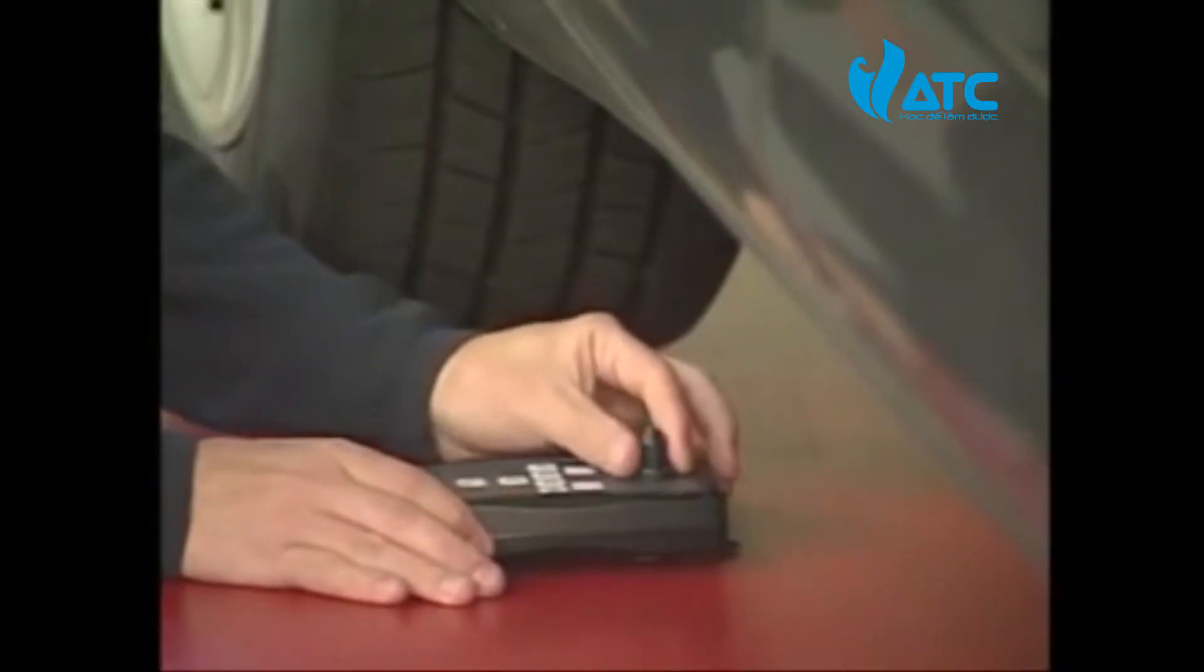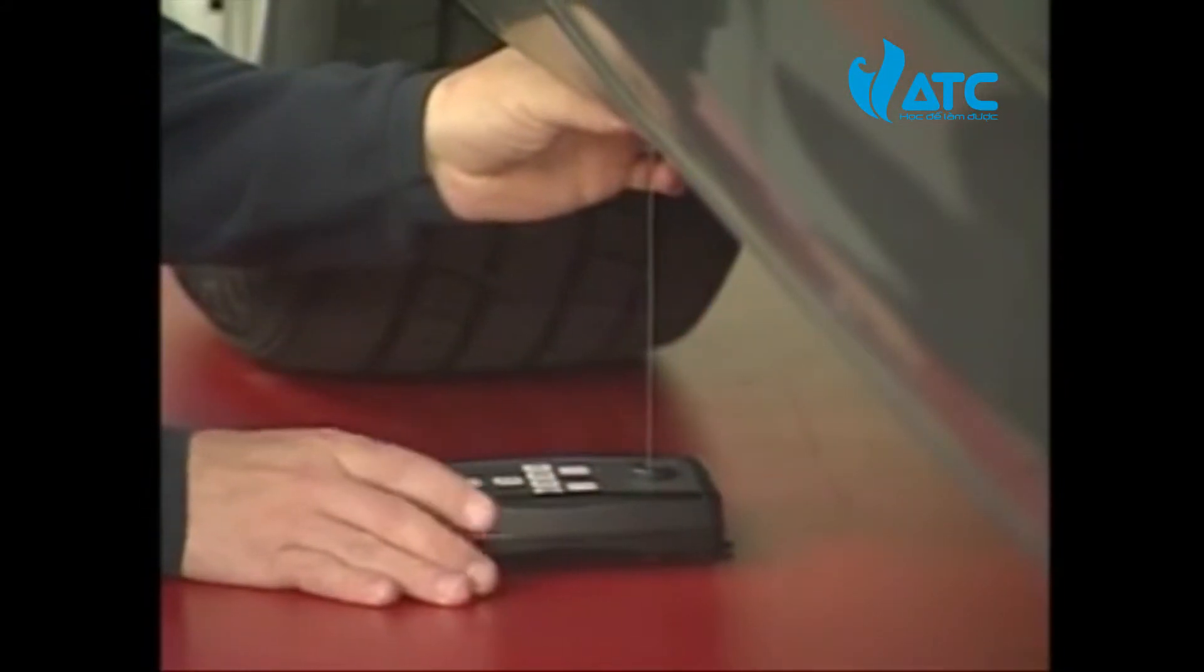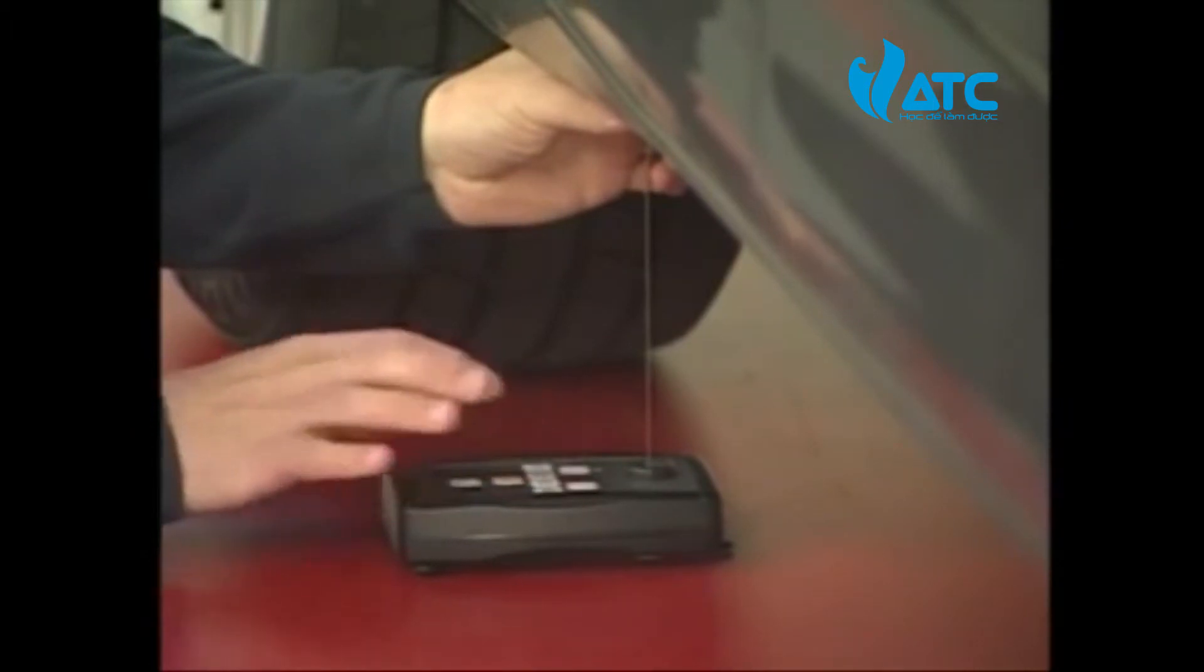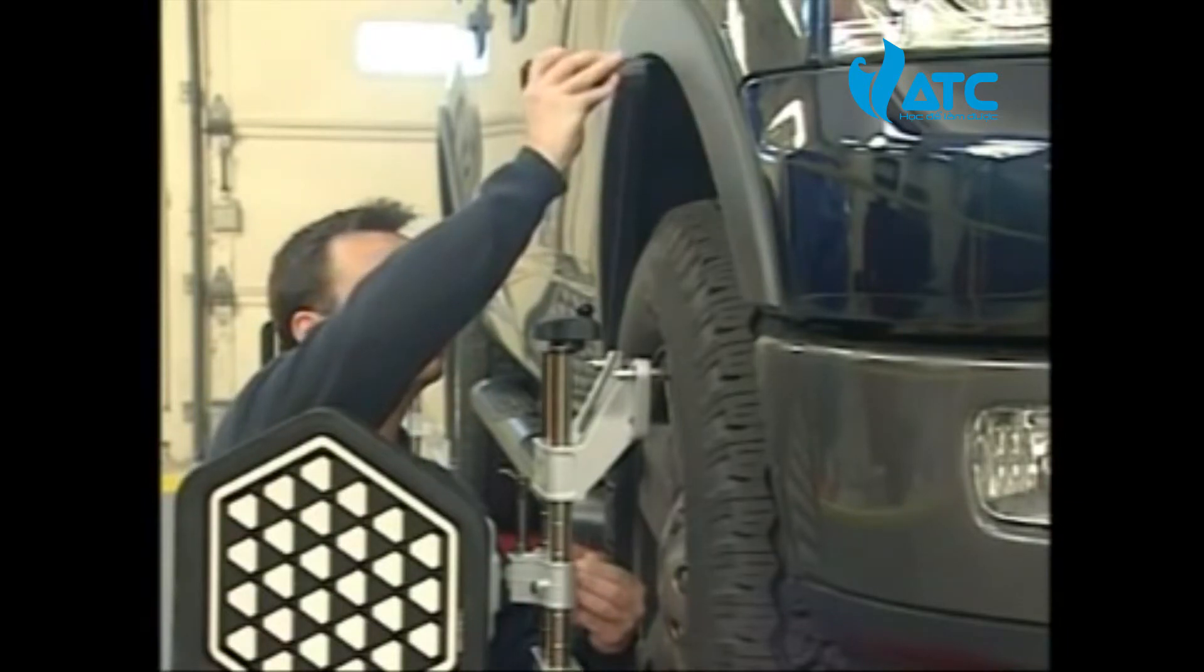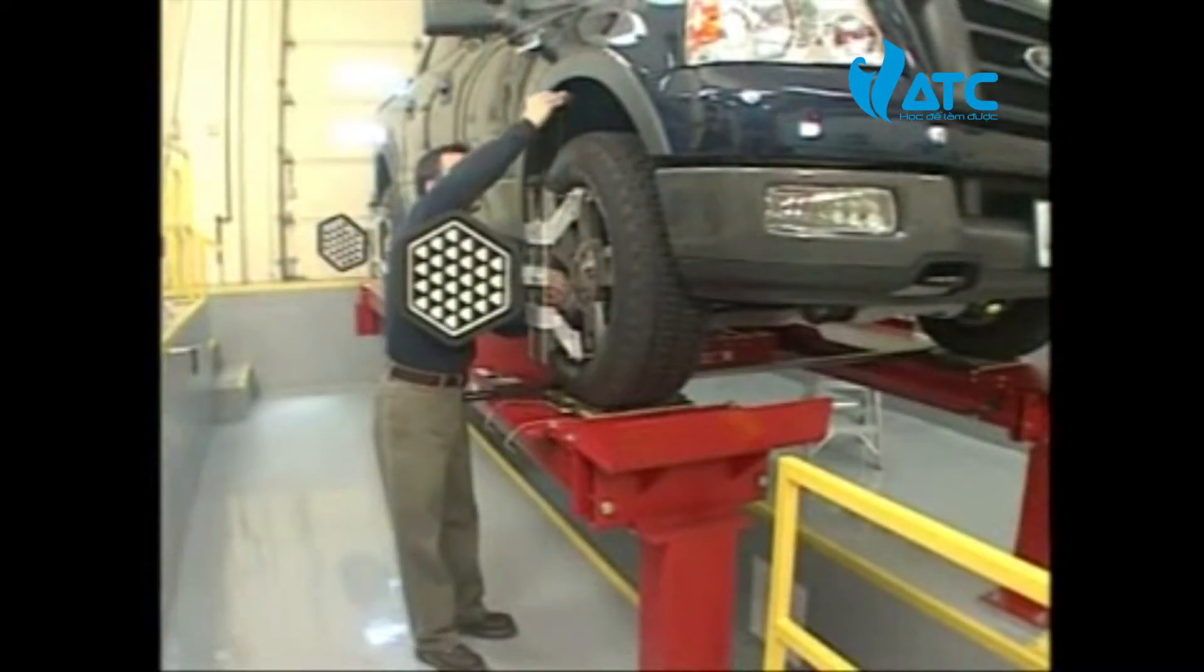Chassis height is the foundation of camber, caster, and toe. If out of specification, angles can be set but dynamic running angles will not be in range. If chassis height is out of specification, it can contribute to poor handling and tire wear.